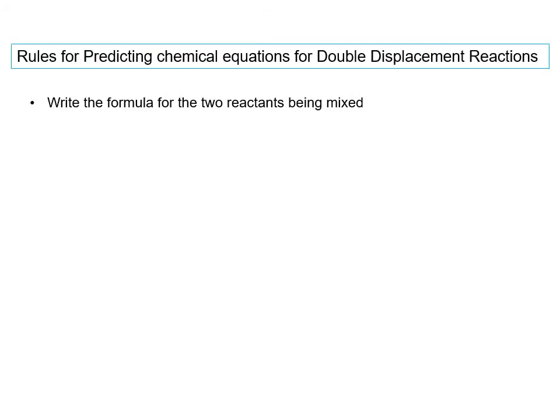Now let's go over the rules for predicting the molecular equation, the complete ionic equation, and the net ionic equation for double displacement reactions. We first write the formula of the two reactants being mixed. Here, we're going to be mixing lithium phosphate with calcium bromide, and both of these are aqueous.